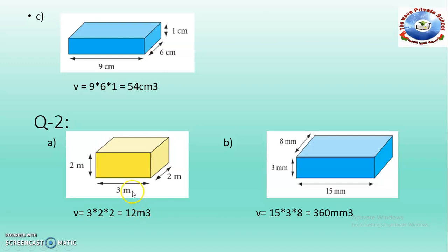Because 1 meter for length, 2nd for width and 3rd for height — so it becomes cubic meters. In this question, length is 15 millimeters, width is 3 millimeters and height is 8 millimeters. So the answer will be 360 millimeters cubed.